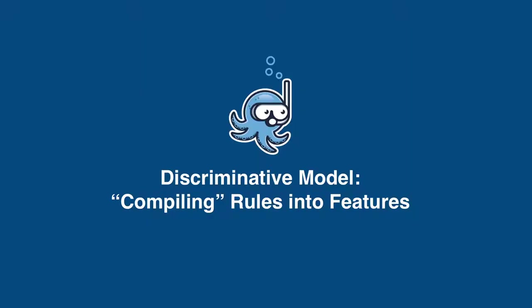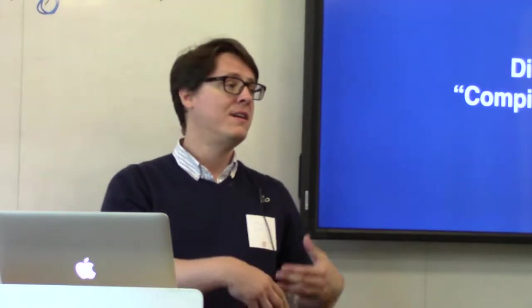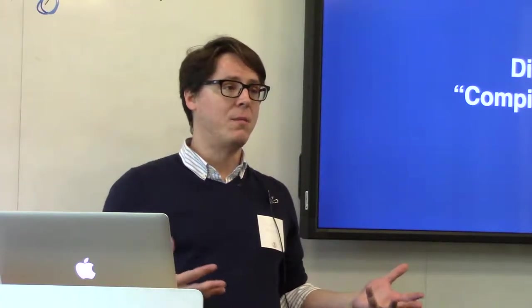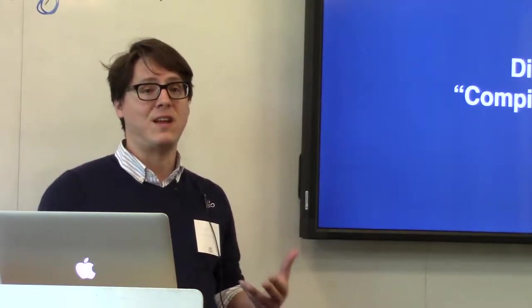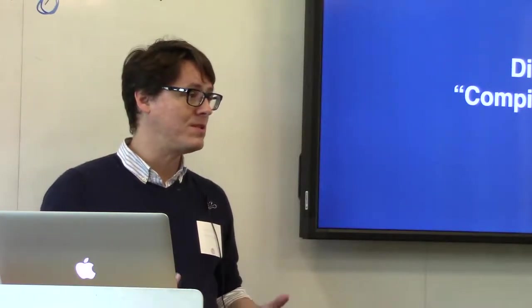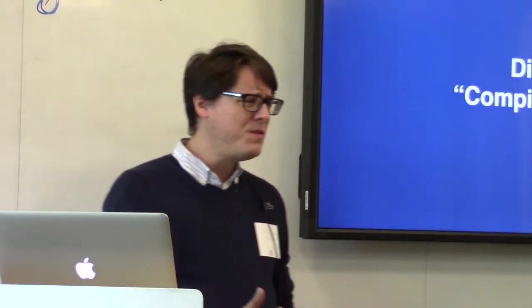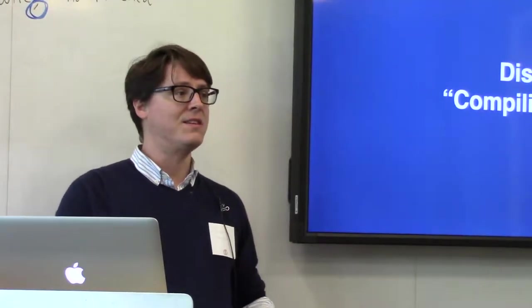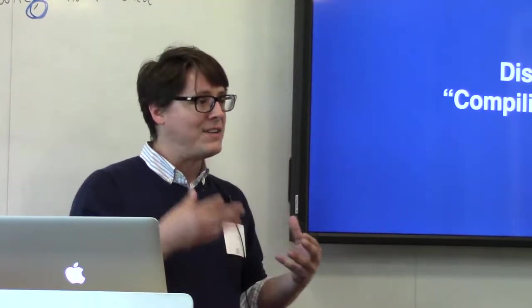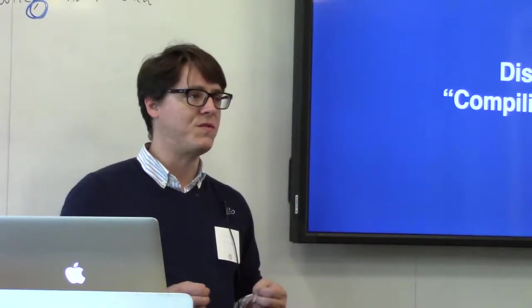The last step of the pipeline is the big end model that we actually want to train using Snorkel. The whole pitch is that off-the-shelf machine learning has become pretty commodity and does a really good job. The deep learning stuff coming online does a great job learning in the presence of lots of labeled data. The most intuitive way to think about this step is as a compiler — you're compiling your labeling functions into features, into representations used for making predictions.